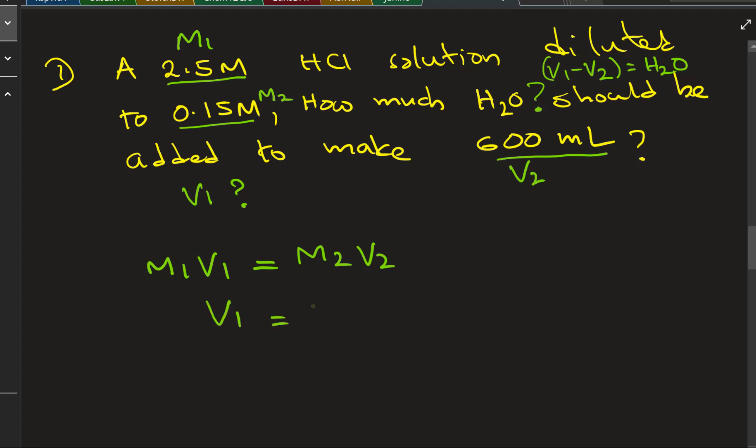Plug into M1V1 equals M2V2. We need V1 and we need everything else on the other side of the equation. So that would be M2V2 divided by M1.